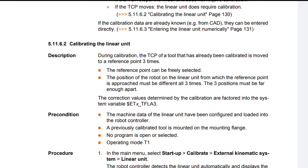The position of the robot on the linear unit from which the reference point is approached must be different all three times. The three positions must be far enough apart. The correction values determined by the calibration are factored into the system variable SET_TFLA3.